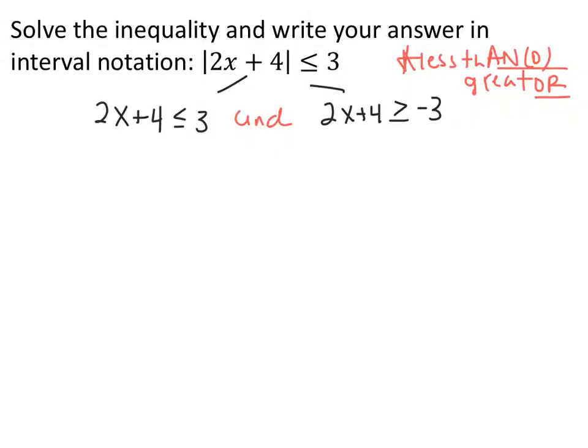Once the absolute value is isolated and we have a less than, it's going to be an AND. Pause the video, solve the two inequalities, write your final answer in interval notation, and graph.